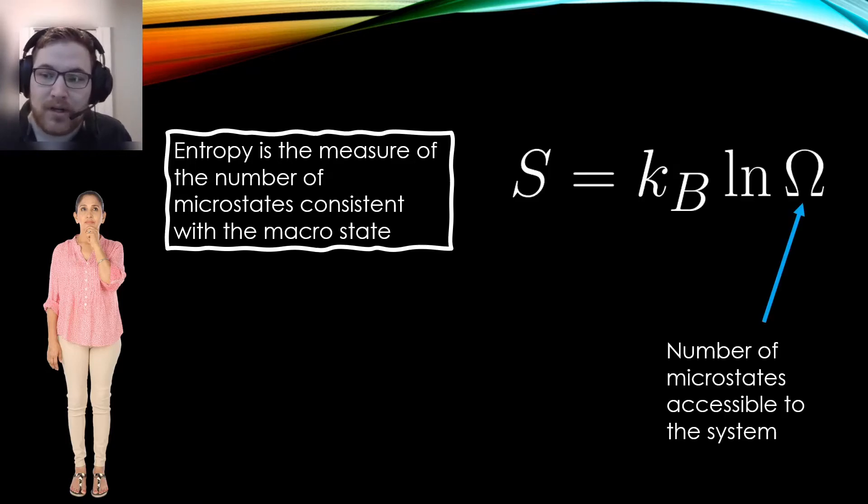perhaps a more experienced student might say, well actually, entropy has a great different definition from first principles. Boltzmann gave us his famous entropy formula, which states that entropy is equal to the Boltzmann constant, which is some number, times the logarithm of the total number of microstates.